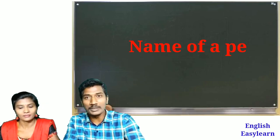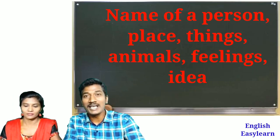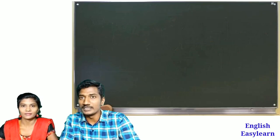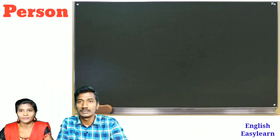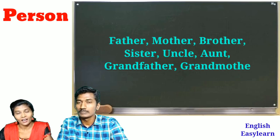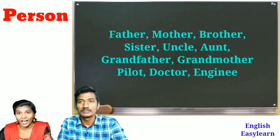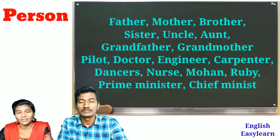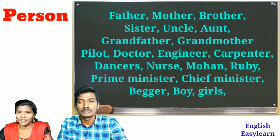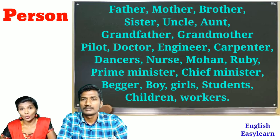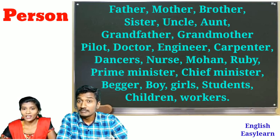We can say a noun is the name of a person, place, things, animals, feelings, ideas and qualities. Let me list out persons: father, mother, brother, sister, uncle, auntie, grandfather, grandmother, pilot, doctor, engineer, carpenter, dancer, nurse, prime minister, chief minister.